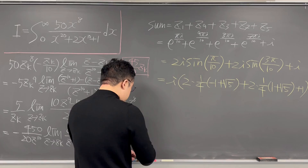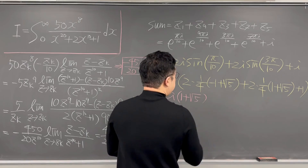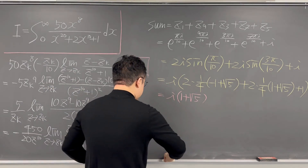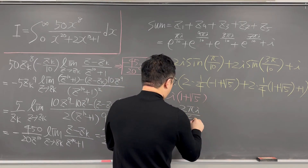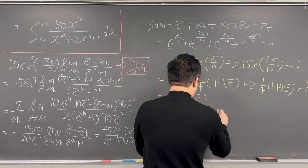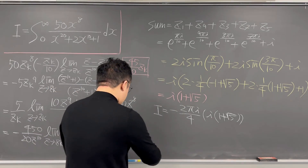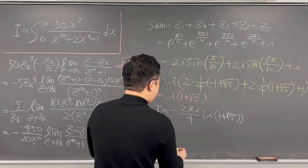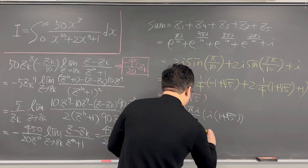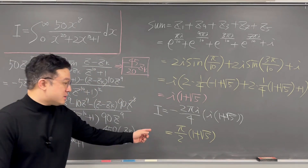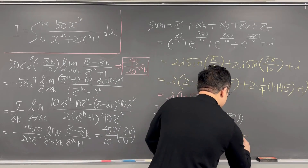So calculating this, it is the same thing as i times 1 plus square root of 5. That is why your integral I is now finally negative 2 pi i over 4 times i times 1 plus square root of 5. So your I is then pi over 2 times 1 plus square root of 5, with the negatives canceling out. This is the answer, and if you want to use the golden ratio, this is the same thing as golden ratio times pi.